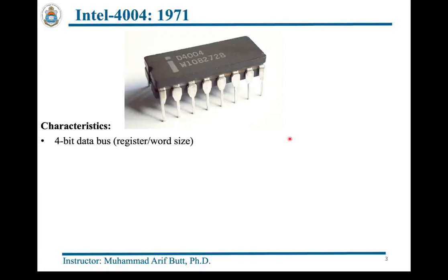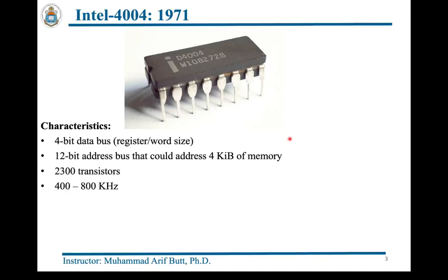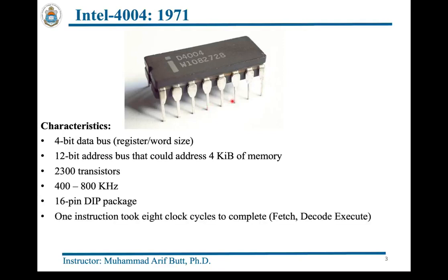Intel 4004 was launched in 1971 and was a 4-bit microprocessor — meaning its word size or register size is 4 bits. It had a 12-bit address bus that could address 4 KB of memory. The chip was composed of roughly 2,300 transistors and could operate at a clock speed of 400 to 800 kilohertz. The 4004 chip was available in a 16-pin dual inline package. It used to take 8 clock cycles to fetch, decode and execute one instruction, so at 400 kHz it could roughly execute 50,000 instructions per second.